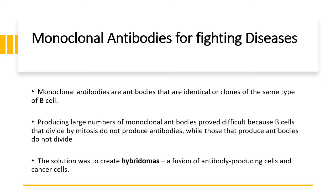We will now look at monoclonal antibodies. Monoclonal antibodies is the very last section of the AS Biology syllabus. Monoclonal antibodies are simply identical clones or identical antibodies of the same type of B cell. It is very difficult because B cells that produce antibodies do not tend to divide by mitosis, and B cells that divide by mitosis do not produce antibodies. So in order to make a lot of the same antibodies, the solution was to create what we call hybridomas — a fusion of an antibody-producing cell and a cancer cell.